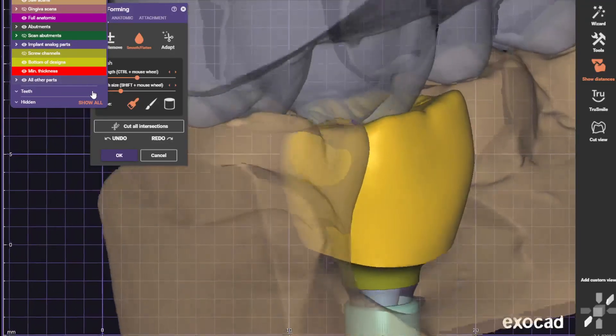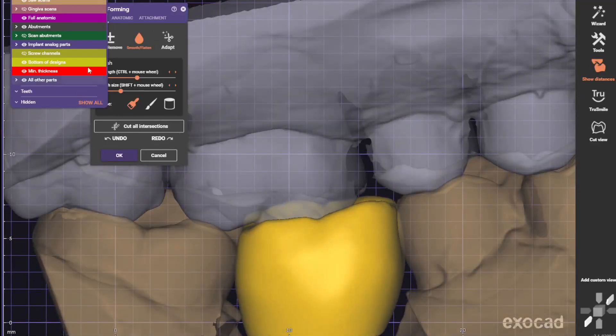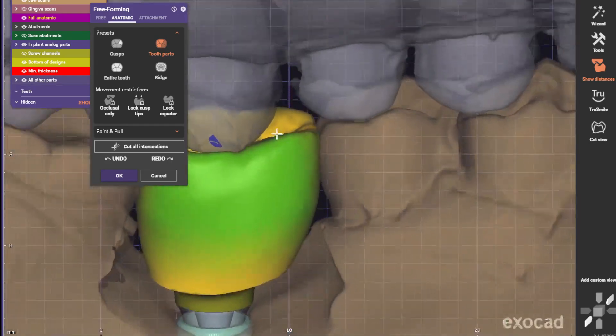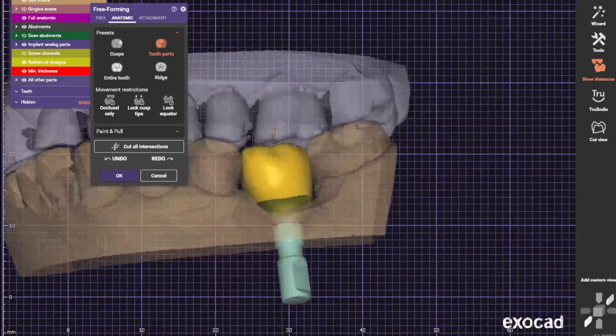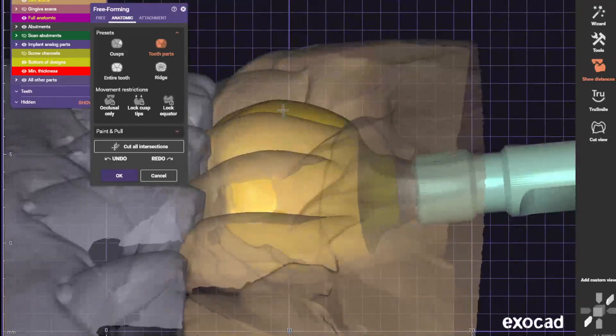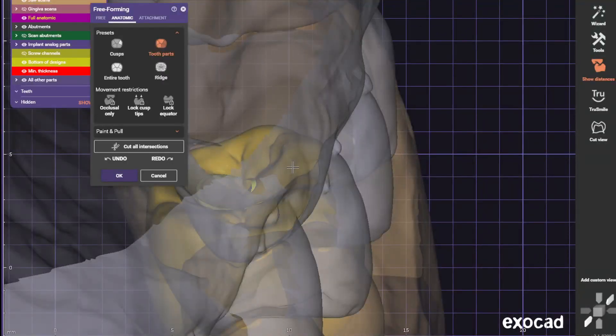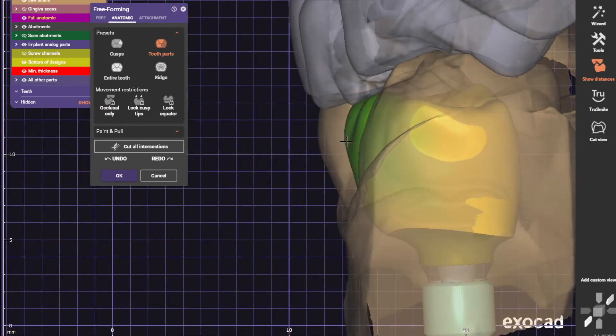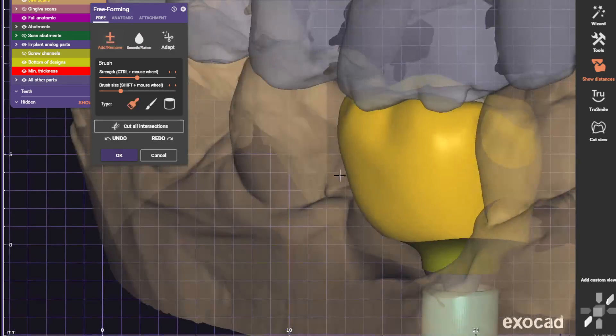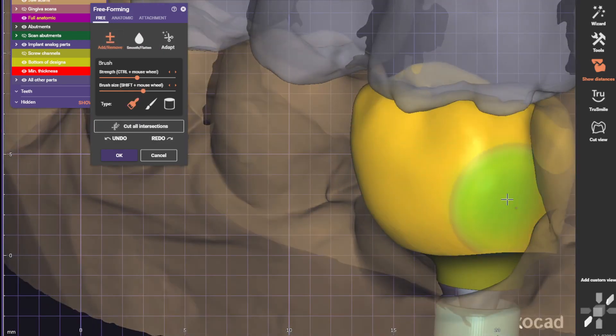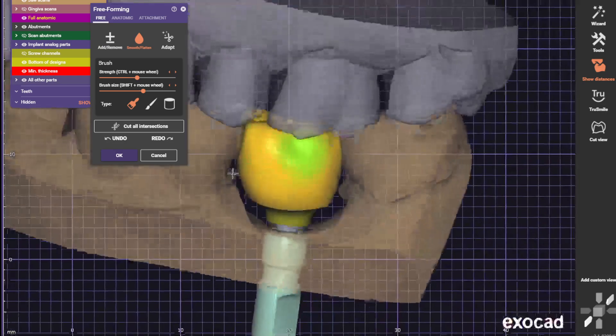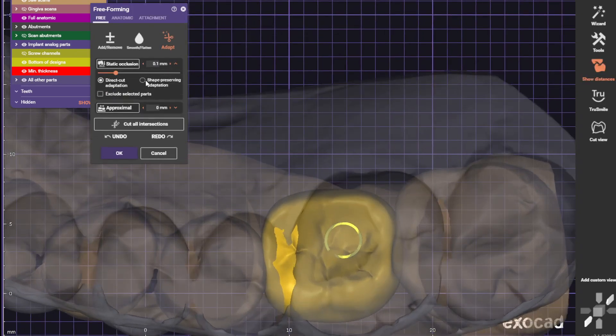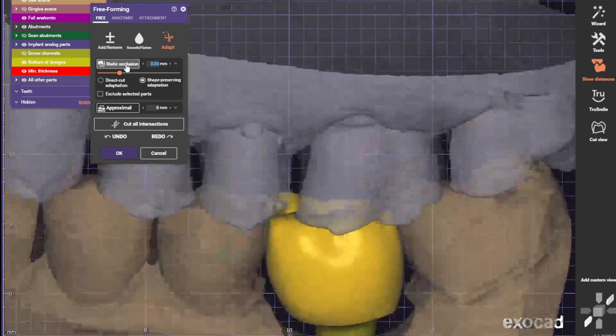Just checking occlusion. Maybe a little bit too high. Okay, occlusion cut right there. Shape, sure rings, drops it down.